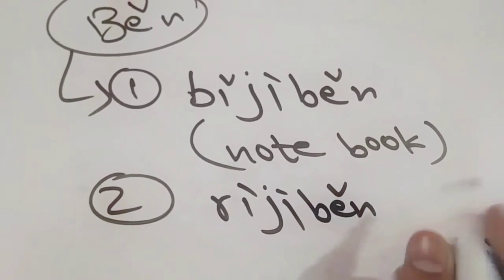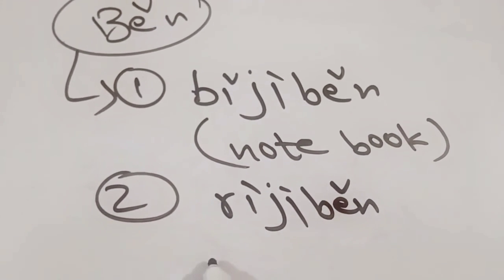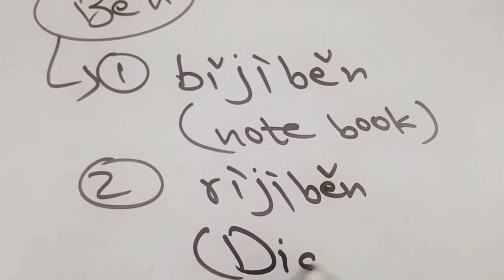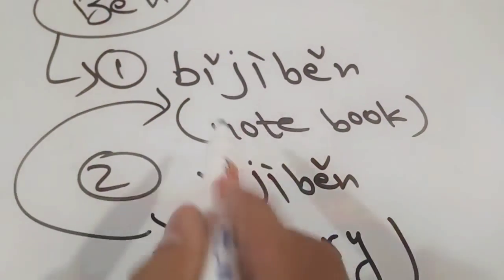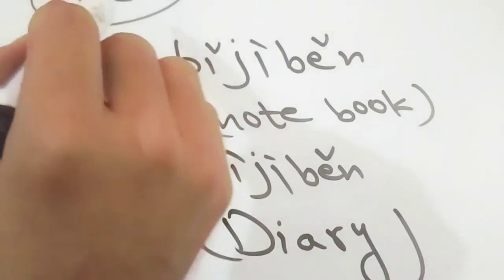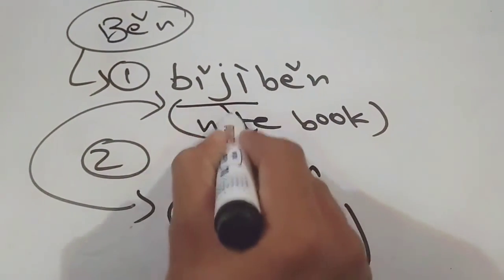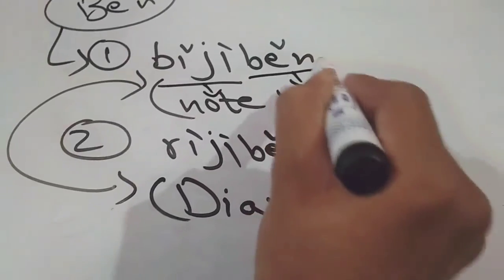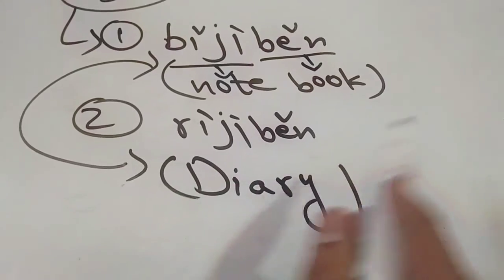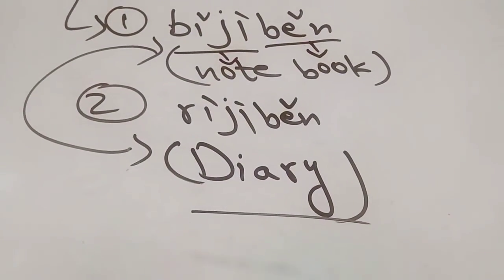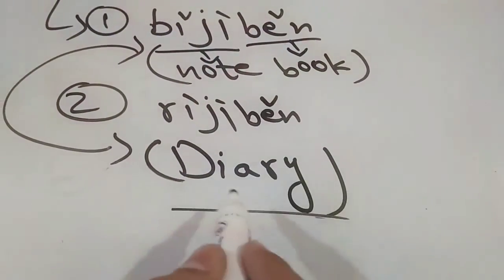Rìjìběn means diary. These two words use with the help of measure word. The word bǐjì means note, and běn is a measure word for book, makes notebook. And rìjì běn is a diary. Diary is a writing book, you mean set at a writing book, that's why běn is used for measure word in diary.